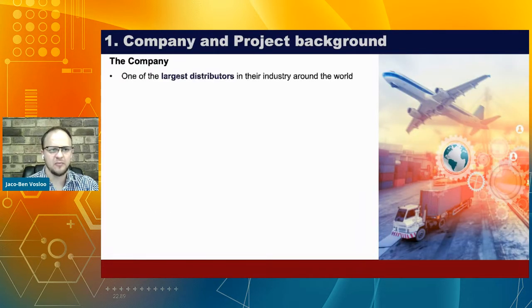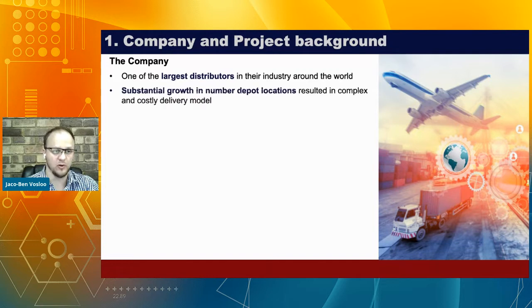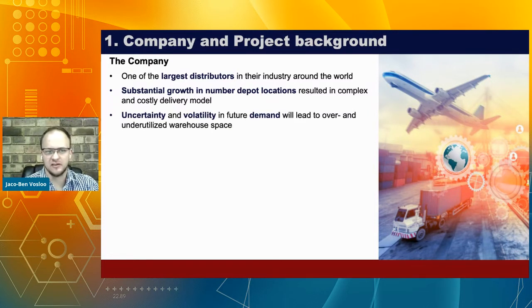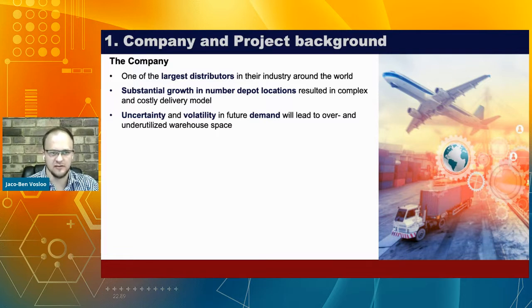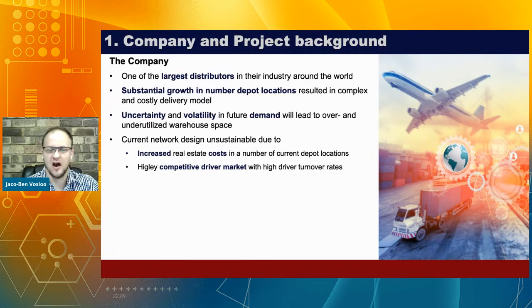Unfortunately we can't name the company, but they are one of the largest distributors in their industry around the world. They've had substantial growth in the number of depot locations over the last couple of years, resulting in a complex and costly delivery model. There's a lot of uncertainty and volatility in future demand, leading to over and underutilized warehouse space. The current network design is becoming unsustainable due to increasing real estate costs and a highly competitive driver market resulting in high driver turnover rates.